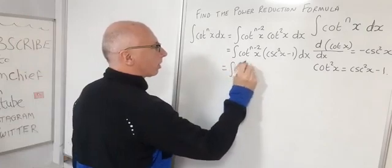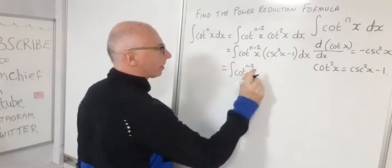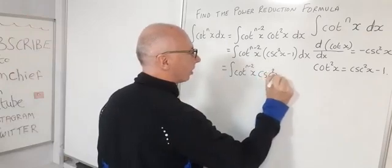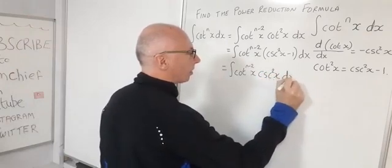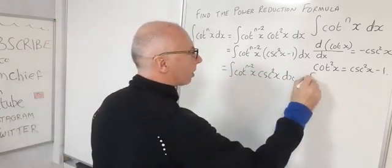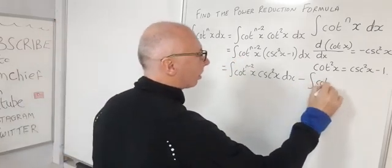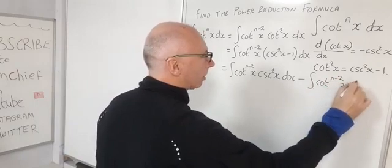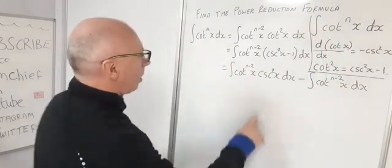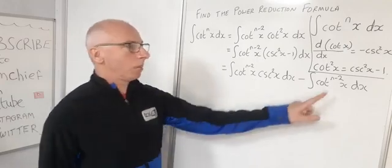Now we split the integral by foiling through. The first integral is cotangent to the n minus 2 of x times cosecant squared of x dx. Then minus 1 times cotangent to the n minus 2 of x gives us a second integral: minus the integral of cotangent to the n minus 2 of x dx.